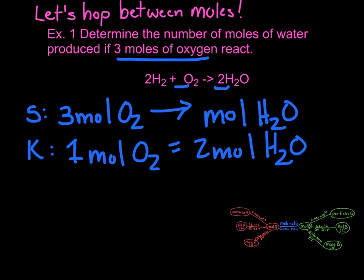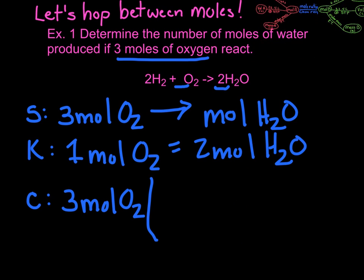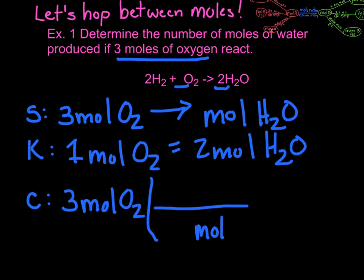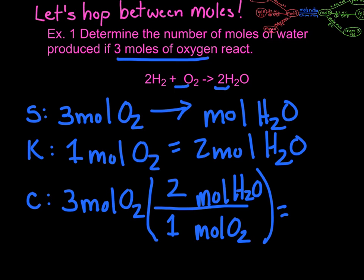The last step is our calculation. We always write our given down first, right? So three moles of oxygen. We build our conversion factor. We want to get rid of moles of oxygen and get to moles of water. There's one mole of oxygen for every two moles of water. So we multiply three times two, divide by one. Our moles of oxygen cancel out because of the division, and we end up with six moles of water for our answer.